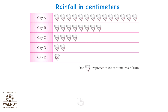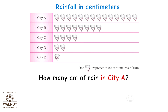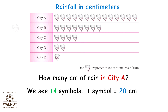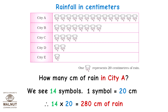Let's take a look at another one. This one gives the rainfall in centimetres of certain cities. One cloud represents 20 centimetres of rain. How many centimetres of rain in city A? We see 14 symbols; one symbol is equal to 20 centimetres, therefore 14 into 20 which is equal to 280 centimetres of rain in city A.